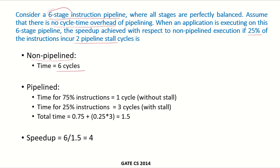In a pipelined implementation, the time for 75% of the instructions which are being executed without a stall would be 1 clock cycle because that is the time required by each instruction in a pipeline, 1 clock cycle per instruction.